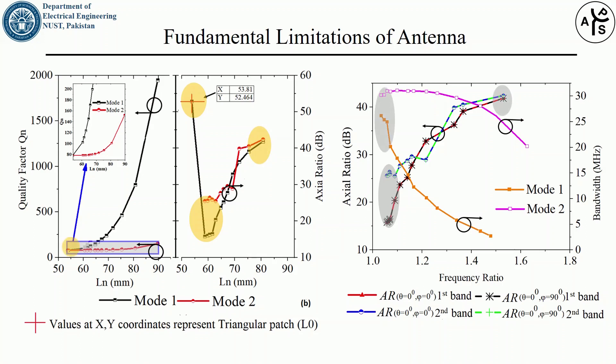This is the quality factor of the degenerate modes of triangular patch antenna. You can see here that the quality factor of mode 1 significantly increases with the increase in the size of the slot whereas there is a slight increase in the quality factor of mode 2. Similar trend is observed in the bandwidth versus frequency plot.